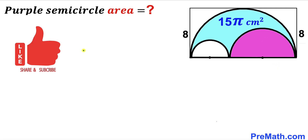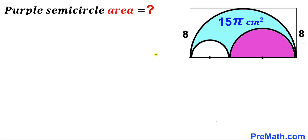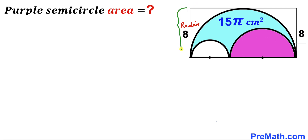Please don't forget to give a thumbs up and subscribe. Keep in mind that this figure may not be 100% true to scale. Here's our very first step: we know the side length of this rectangle is 8 cm, and this is the same as the radius of the big semicircle.